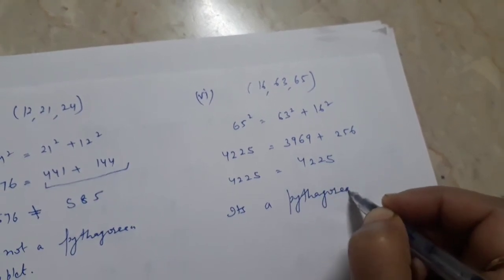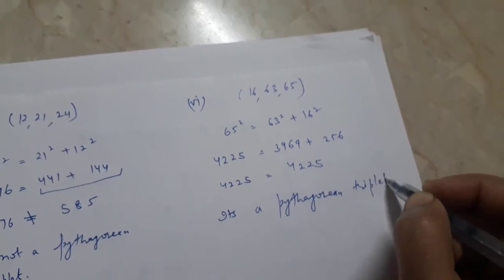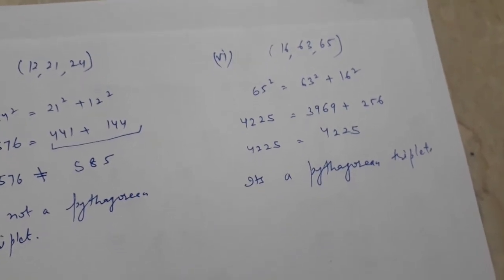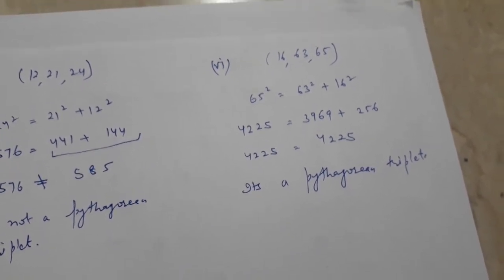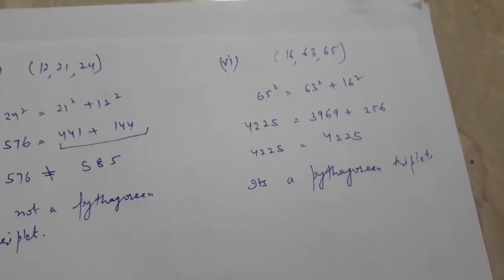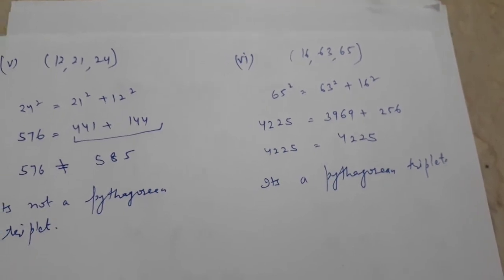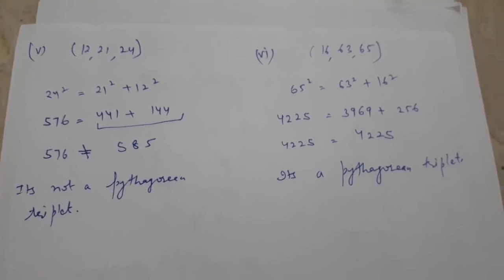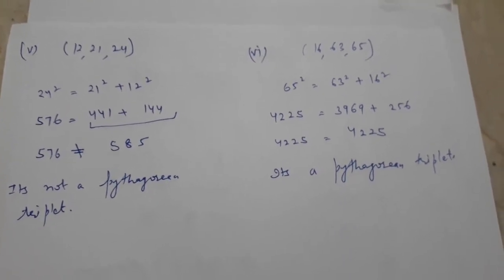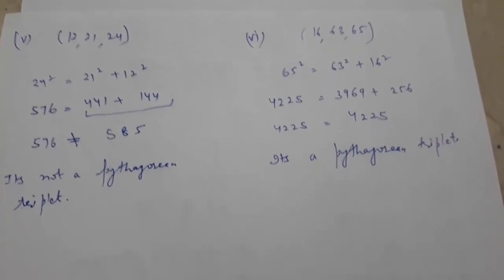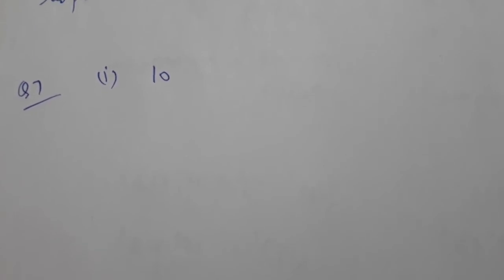I hope all six parts of question number six are very much clear. Now we will proceed to question number seven, which is a Higher Order Thinking Skills question. It is one of the most important questions of Squares and Square Roots, so have a serious look at how to solve it. This is question number seven of exercise 3.1.